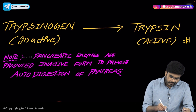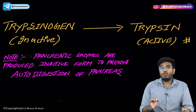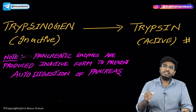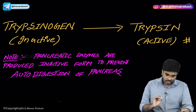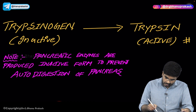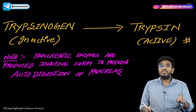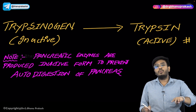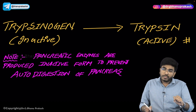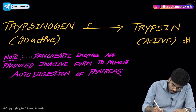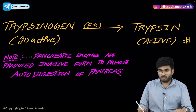Wherever you see the suffix '-ogen,' that substance is inactive. So trypsinogen and chymotrypsinogen are all inactive substances. Trypsinogen is converted into trypsin with the help of enterokinase — not HCl. Pepsinogen is converted into pepsin with the help of HCl. Enterokinase is essentially the intestinal juice. Remember: trypsinogen is converted into trypsin with the help of enterokinase.